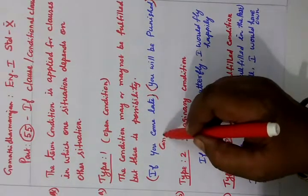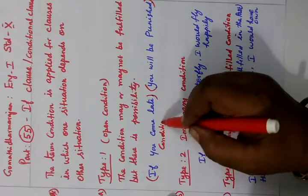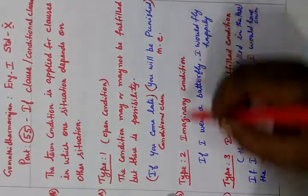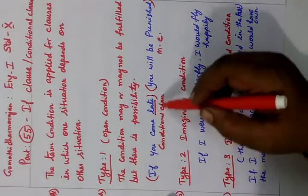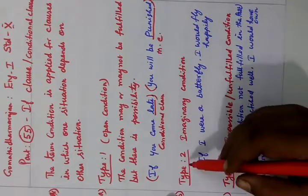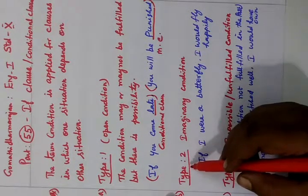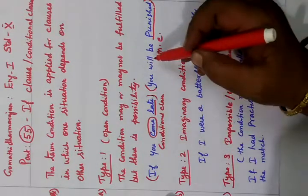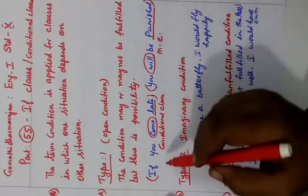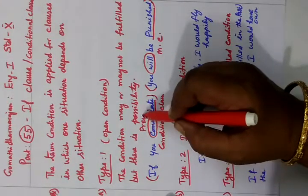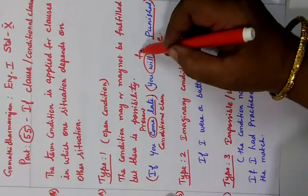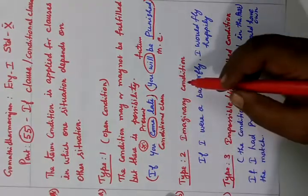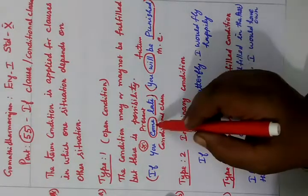This is the conditional clause and this is the main clause. 'Come' is the present tense in the conditional clause, so you get the future form — 'will' — in the main clause. In Type 1, present tense in the conditional clause gives future tense in the main clause.